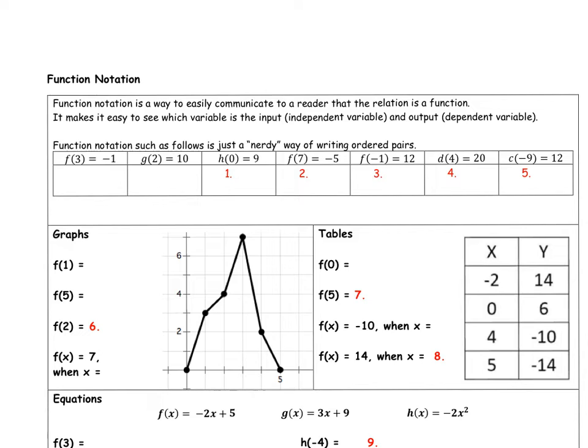Remember, when you graph points, when you have a graph, this is a function, and all these little points on here are all solutions to the function. So that's what you're doing here when you have function notation: you're basically showing the different solutions or the different points that are part of the function.